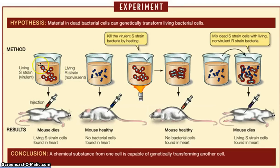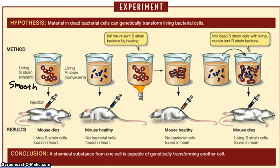There was what he called an S strain because in a petri dish under a microscope it looked smooth. He found another strain — same bacteria but a different strain, not a different species, kind of like the difference between a black lab and a poodle: same species but different types, different strains.